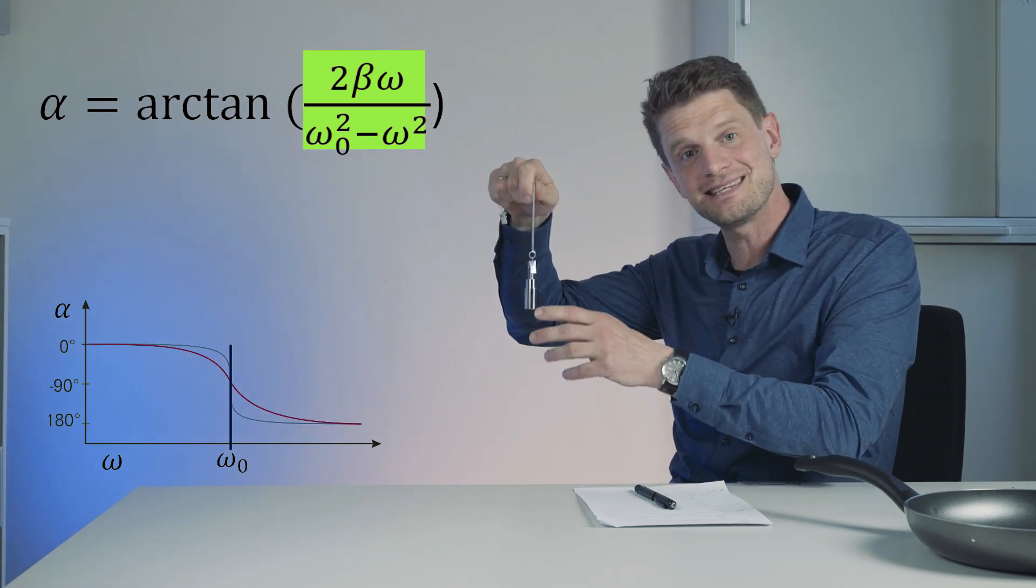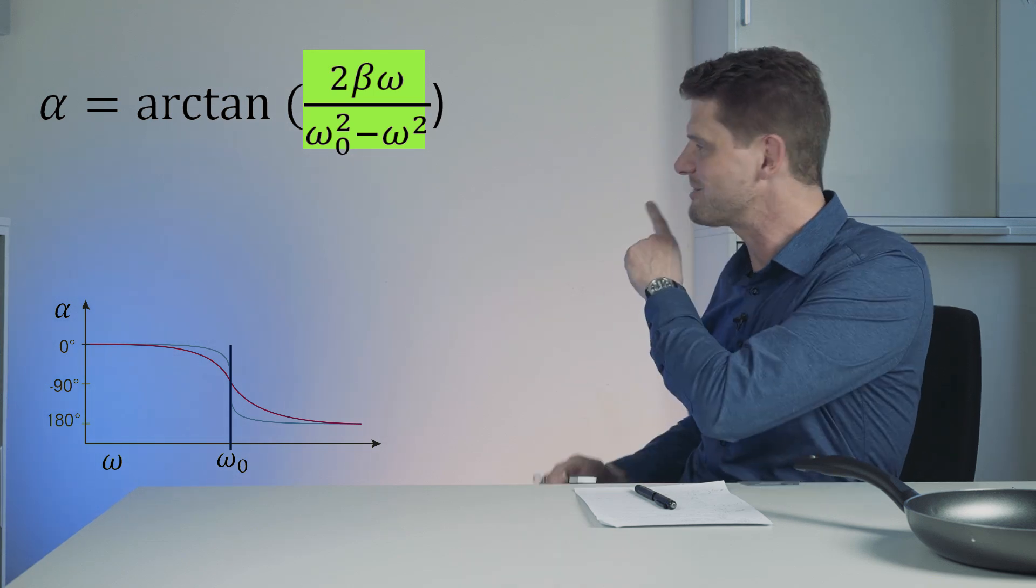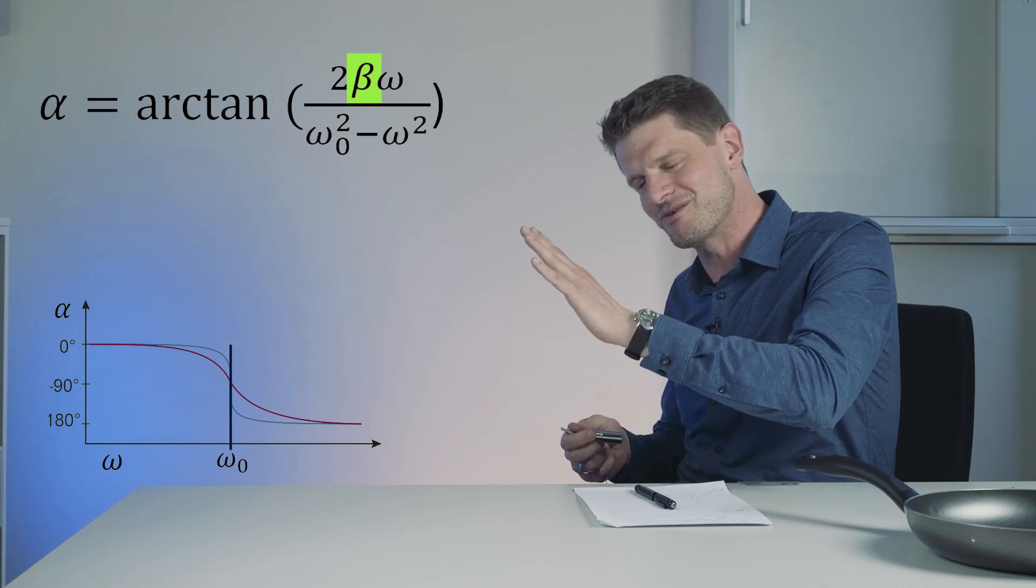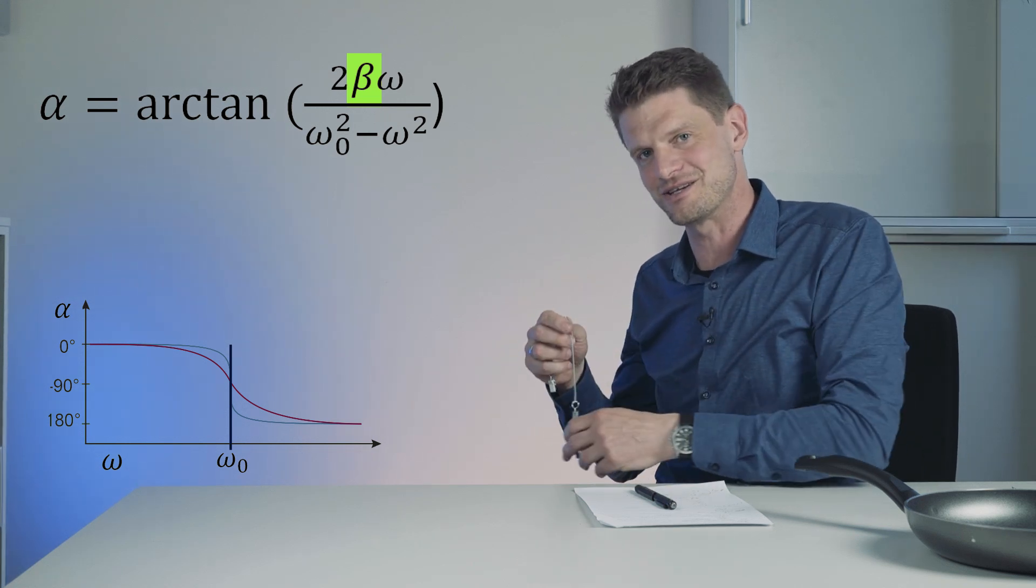It moves in phase, but depending on beta, if beta is higher it could move a little bit earlier to a phase deviation.